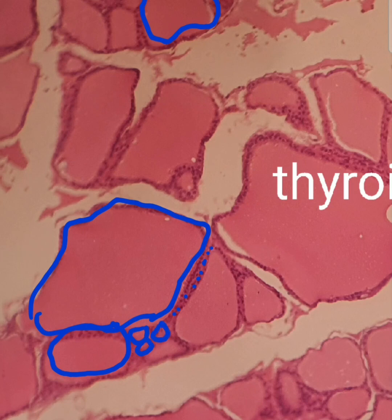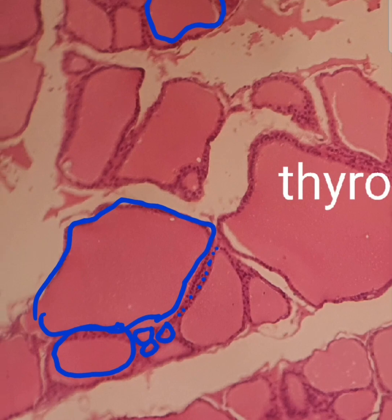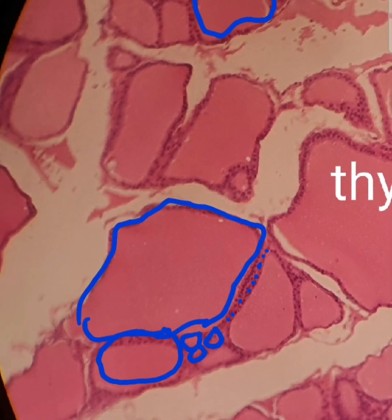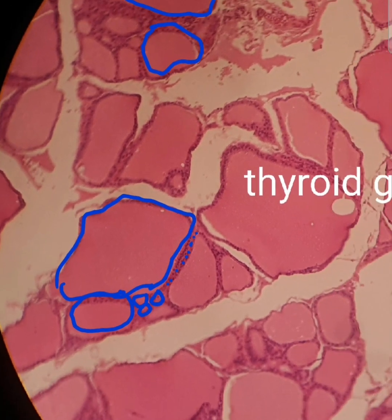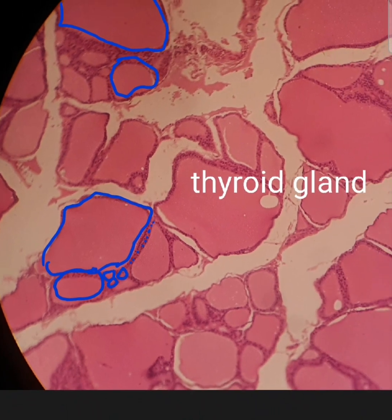Here in the surrounding there are numerous capillaries. So to summarize: we have the characteristic follicles with the pink colloid, lined by simple cuboidal epithelium, very thin inter-follicular stroma with the parafollicular cells that are in the form of clusters, and there are numerous capillaries.